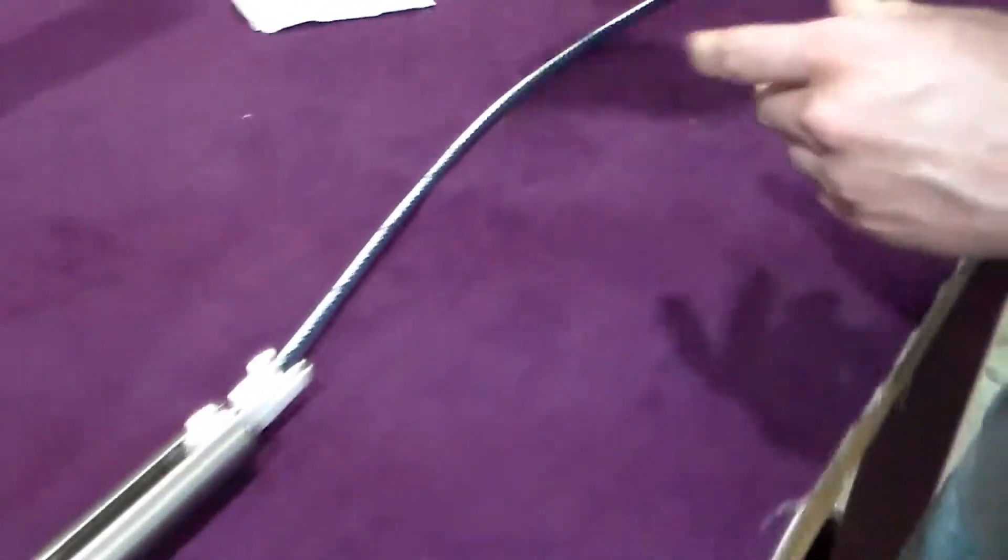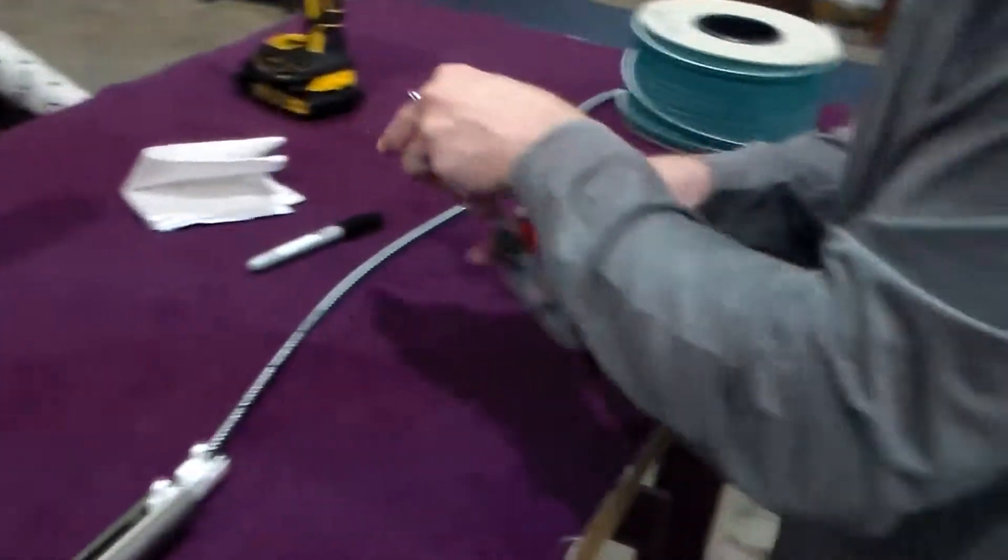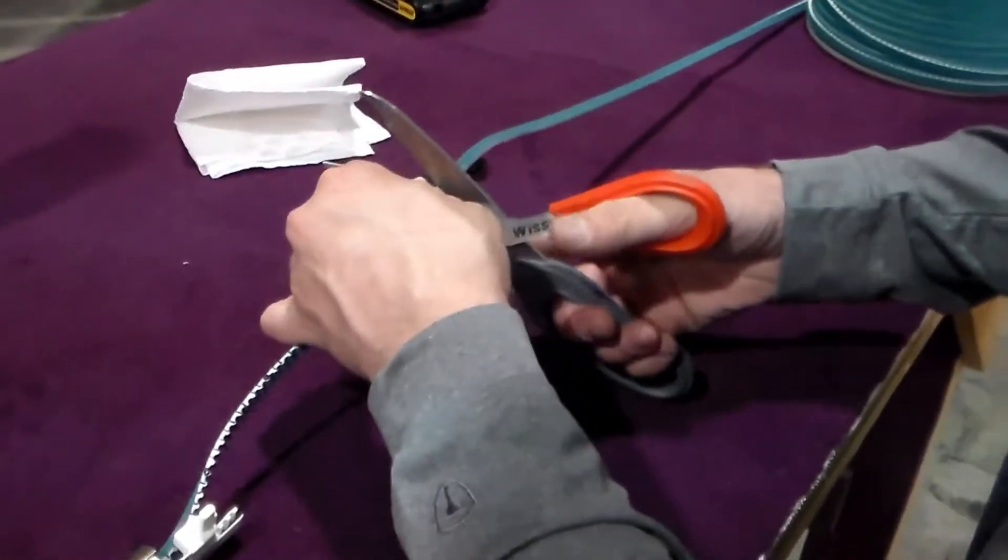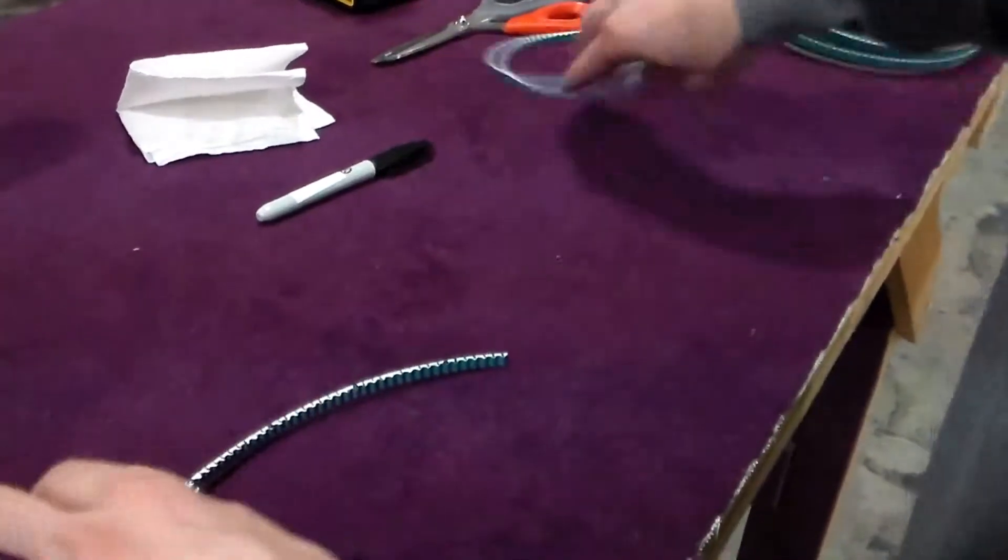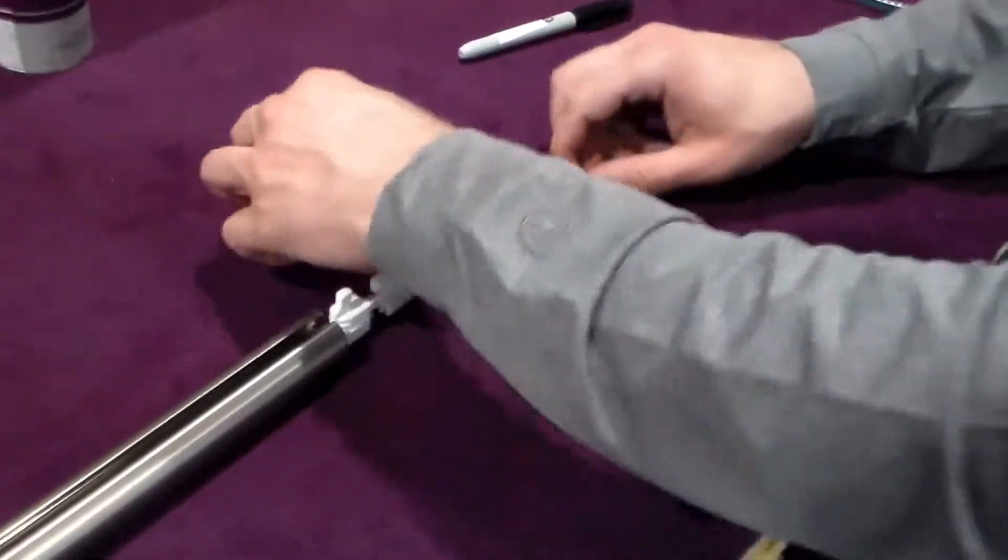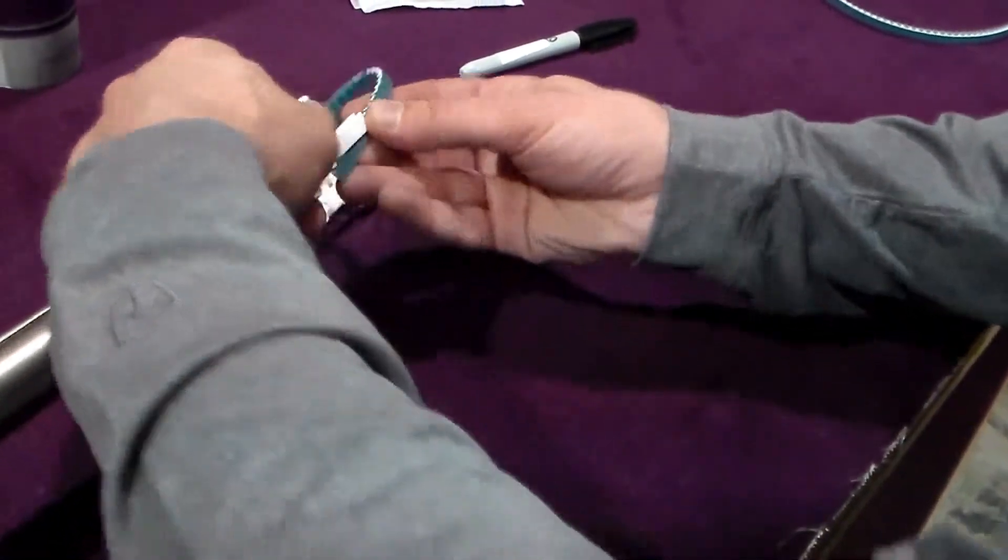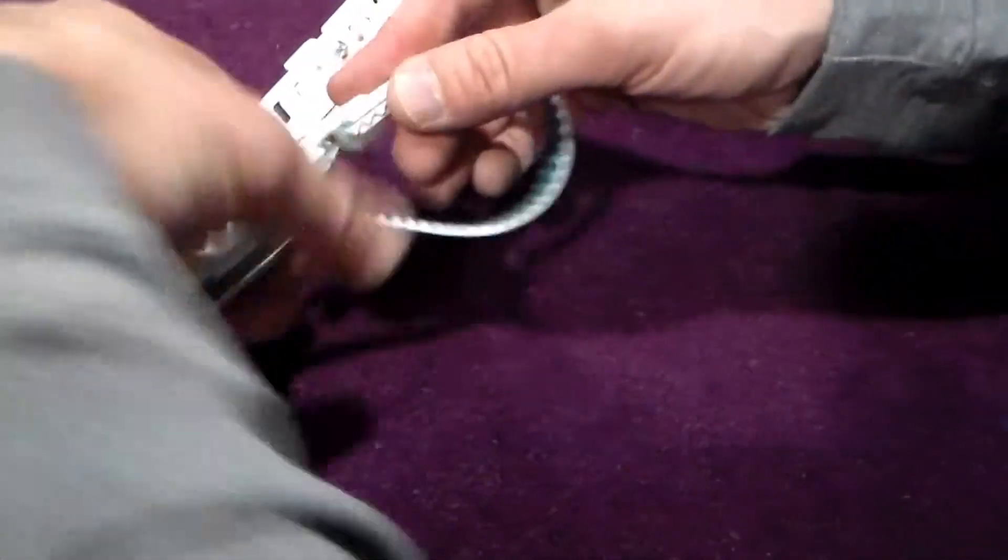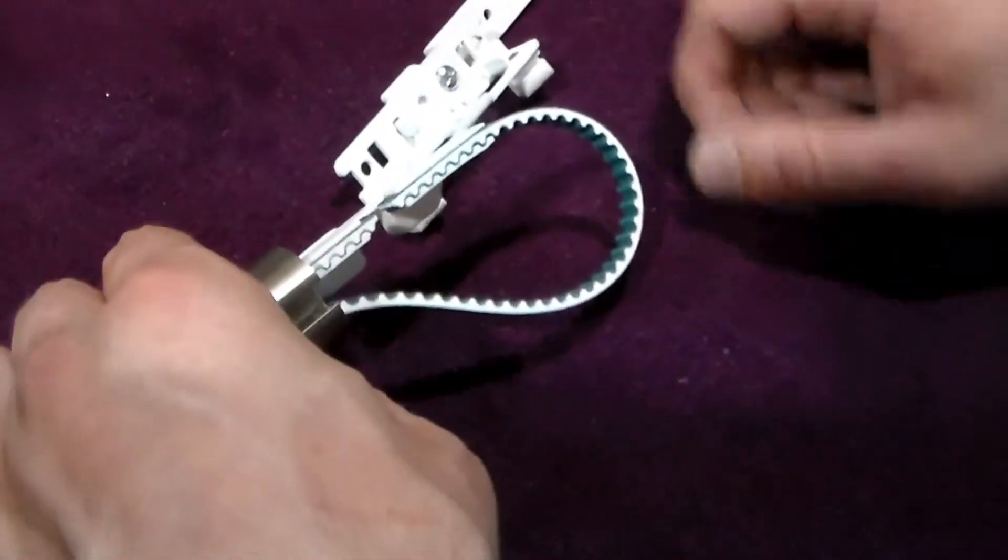At the 45th tooth, you'll cut off your belt. Then you'll loop the belt around and attach it again with the one tooth hanging over.